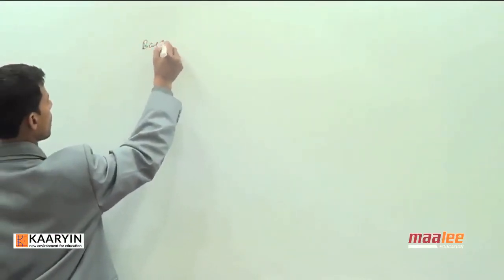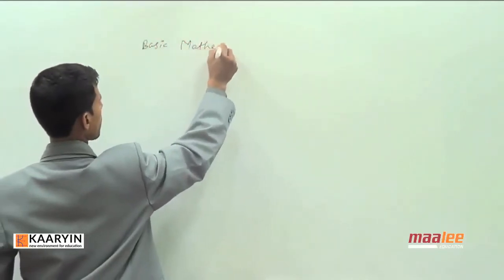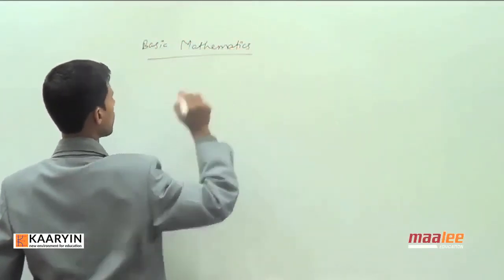Today we are going to talk about a topic in physics that is quite important. The first thing to understand is that to learn physics, we need some basic mathematics. What we are going to learn today mainly has to do with vectors and some part of calculus. So our topic for today is basic mathematics required to understand physics.